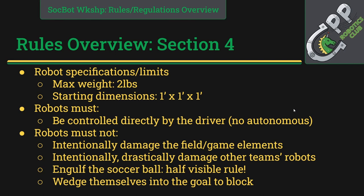Section 4 is design constraints and regulations — pay close attention to this one. The maximum weight for your robot is 2 pounds, so keep in mind that more batteries for stronger motors means more weight. The starting dimensions are 1 foot by 1 foot by 1 foot. The weight limit is more of a design constraint versus the size. Also, this is the starting dimension; if you have a device that wants to expand after the match starts, that's allowed.